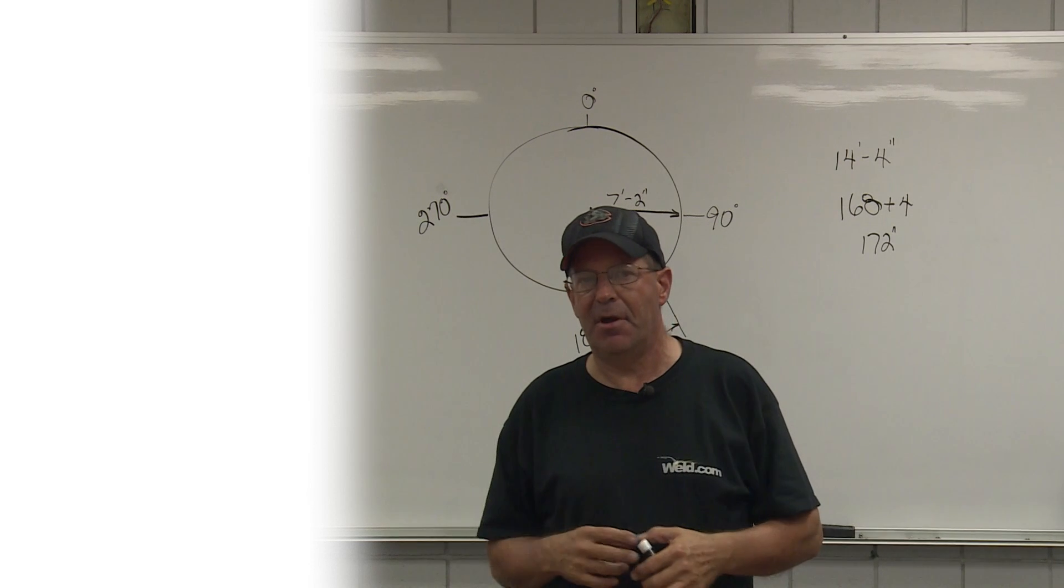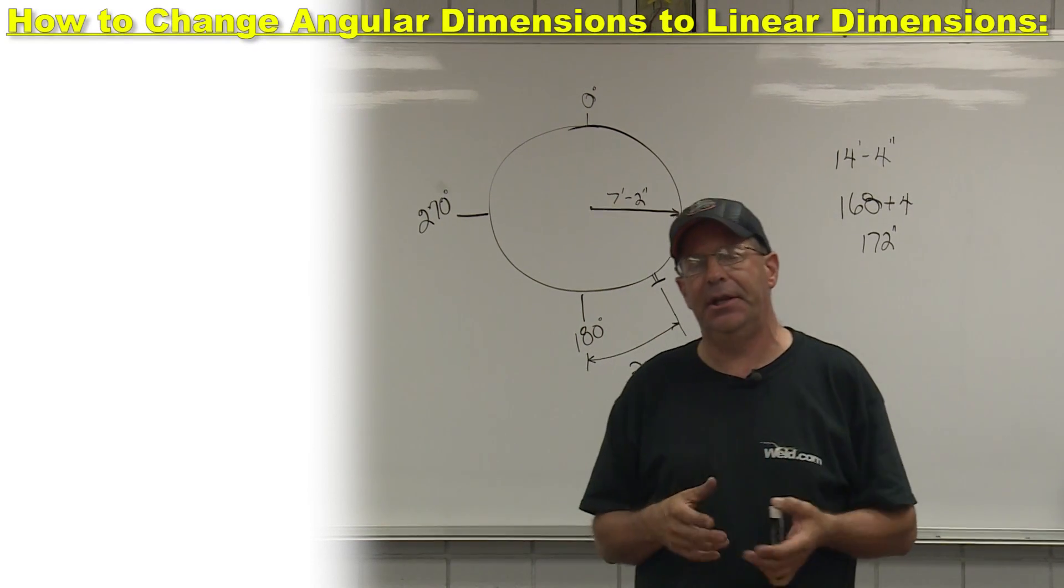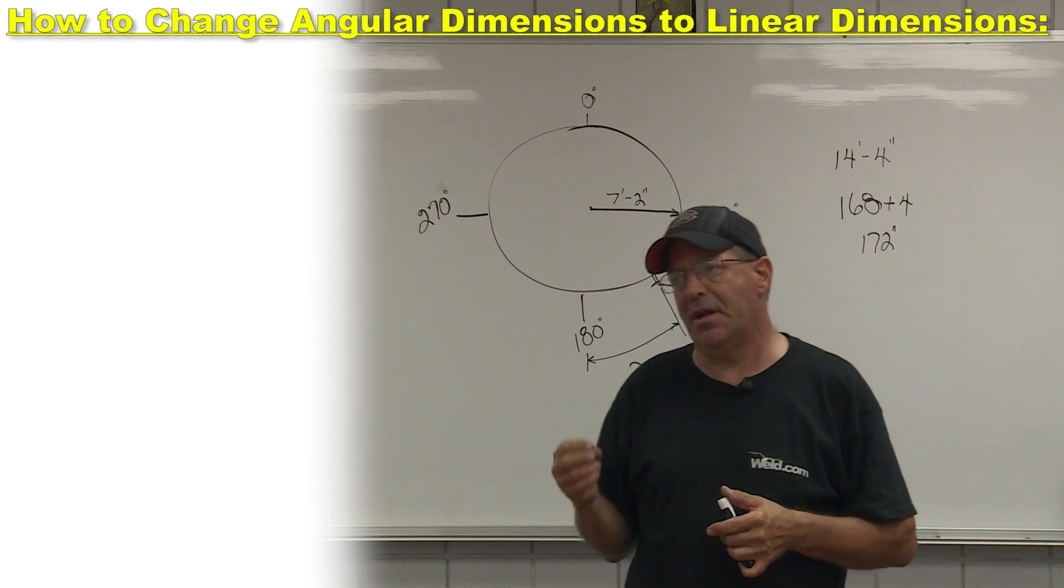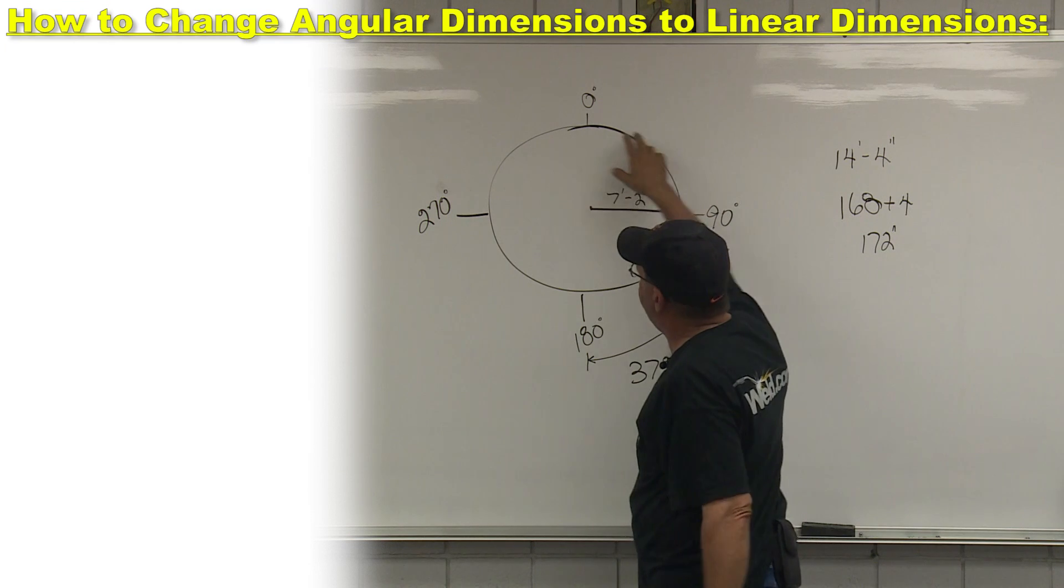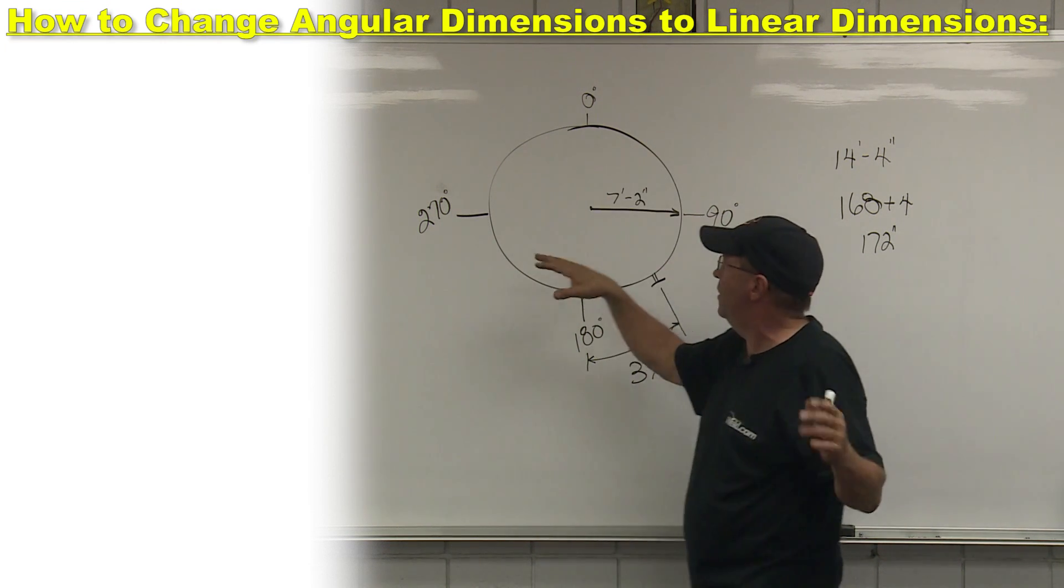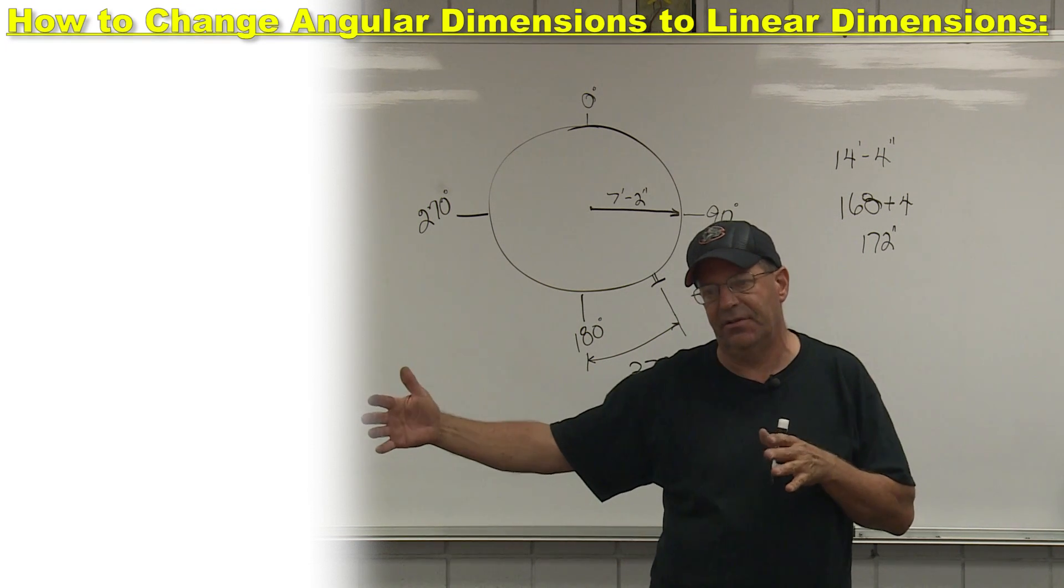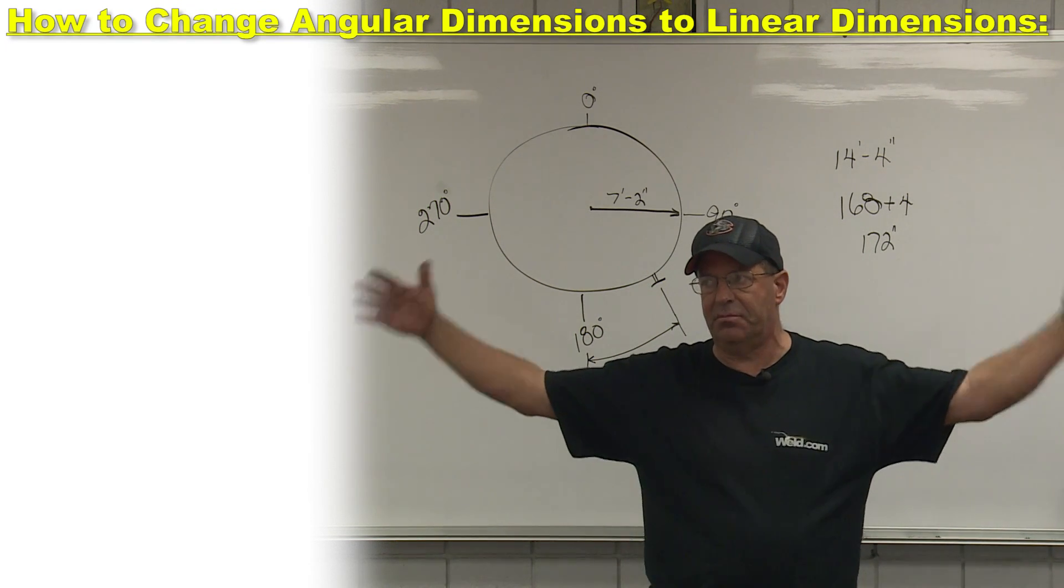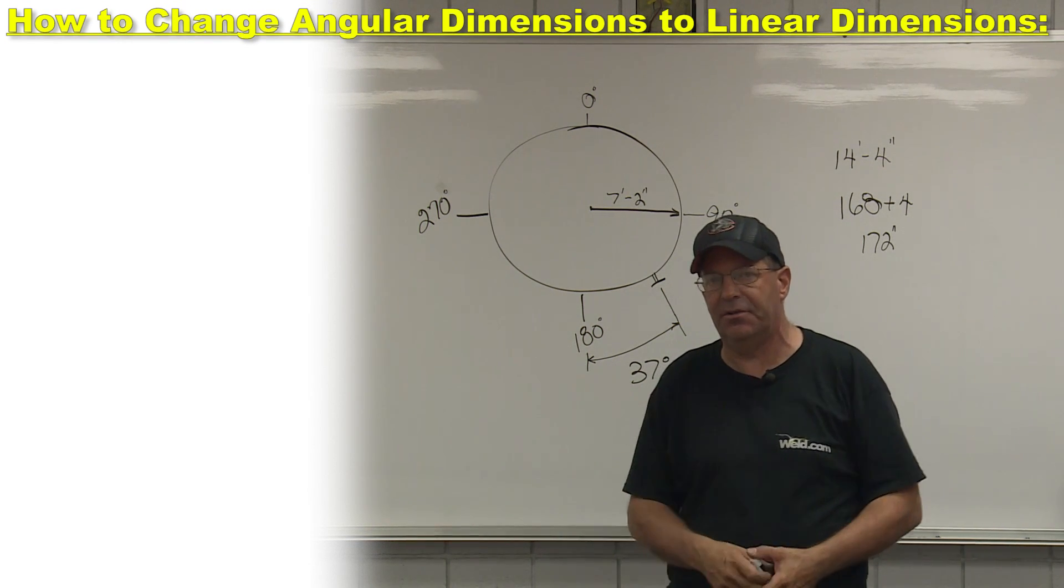One of the problems that we always came up with was we've got to change an angular dimension to a linear dimension. If you think about this for a second, I've shown you this out here. Just imagine this being a giant shell. It's seven foot two inches in radius, which makes it 14.4. That's a big old shell. Imagine that being out of three sixteenths, it's hollow, it's not solid.